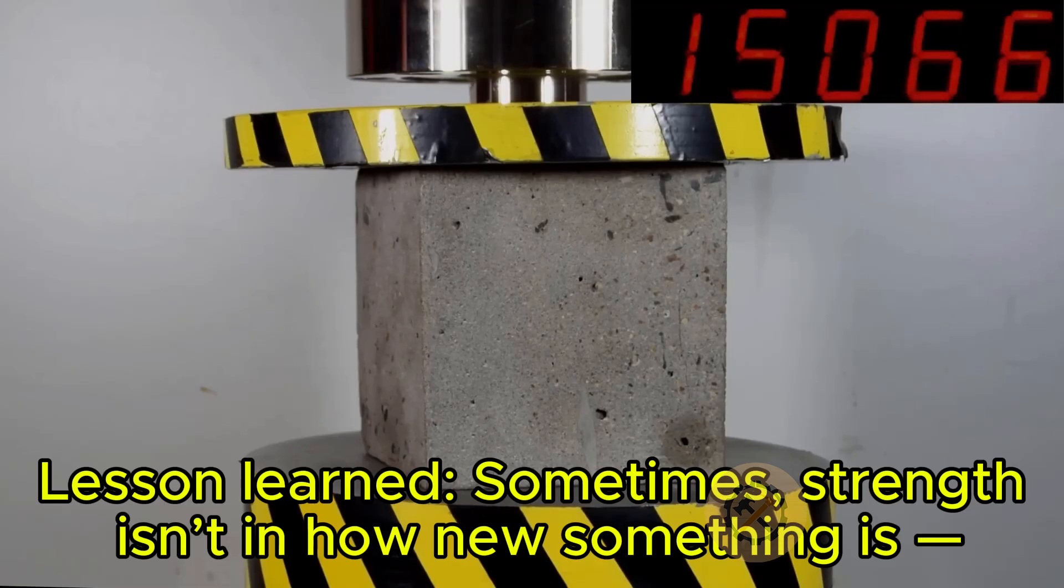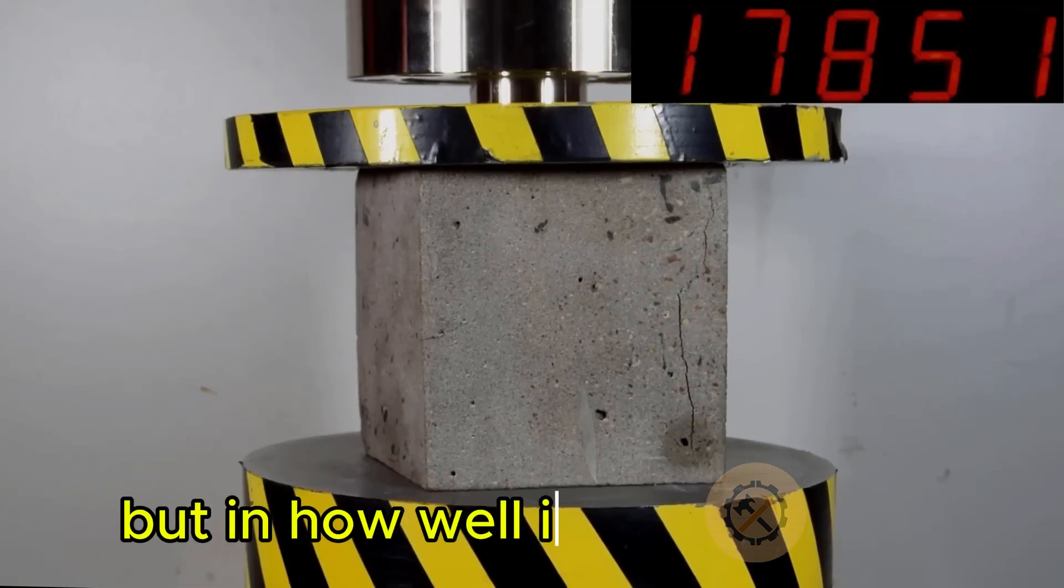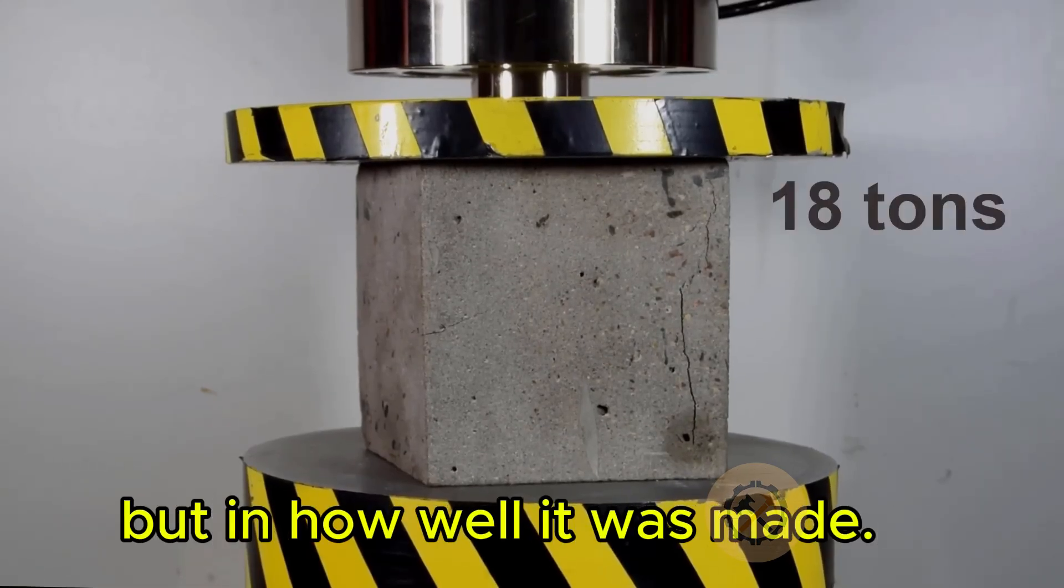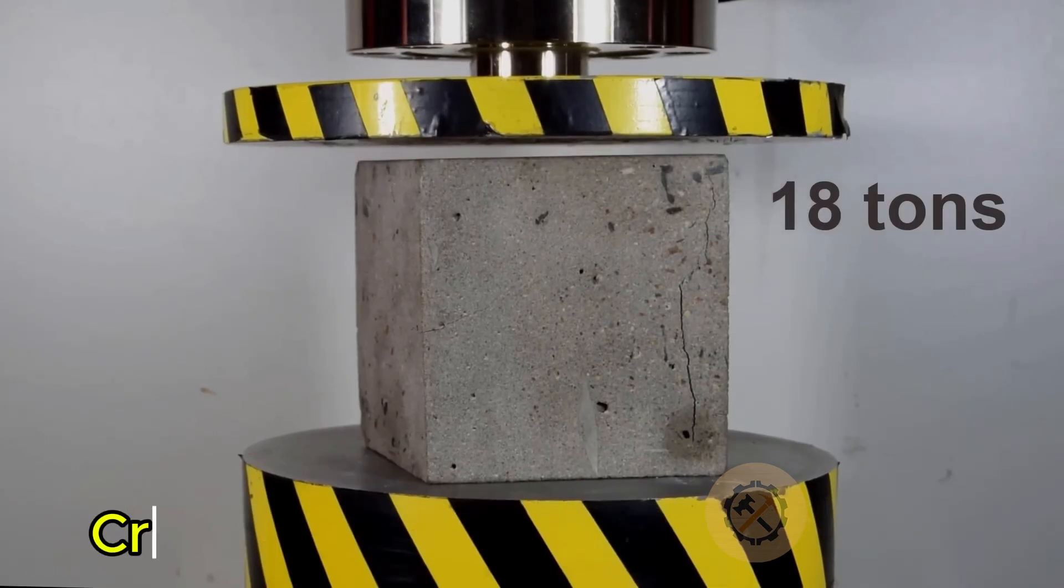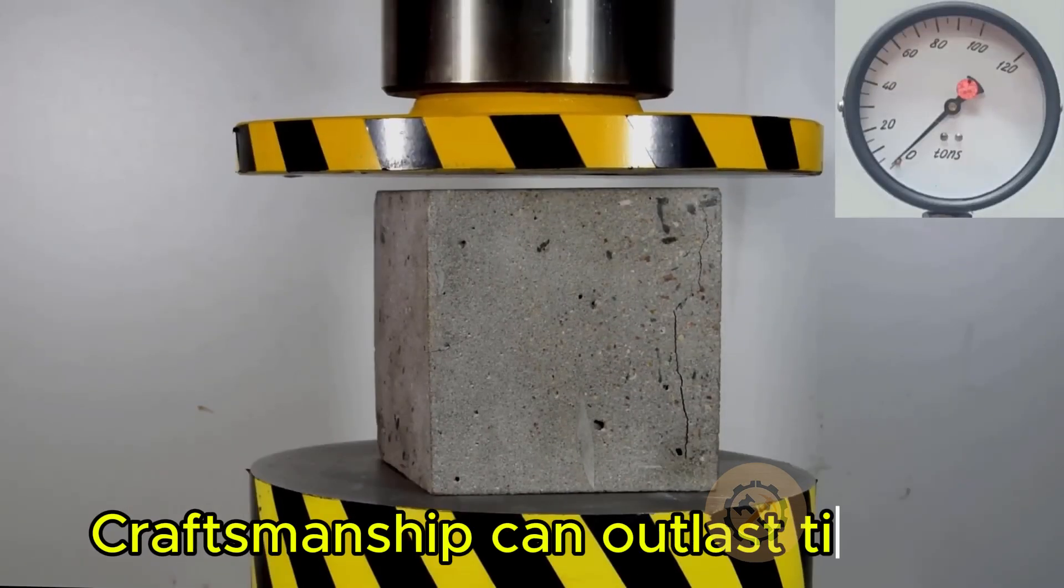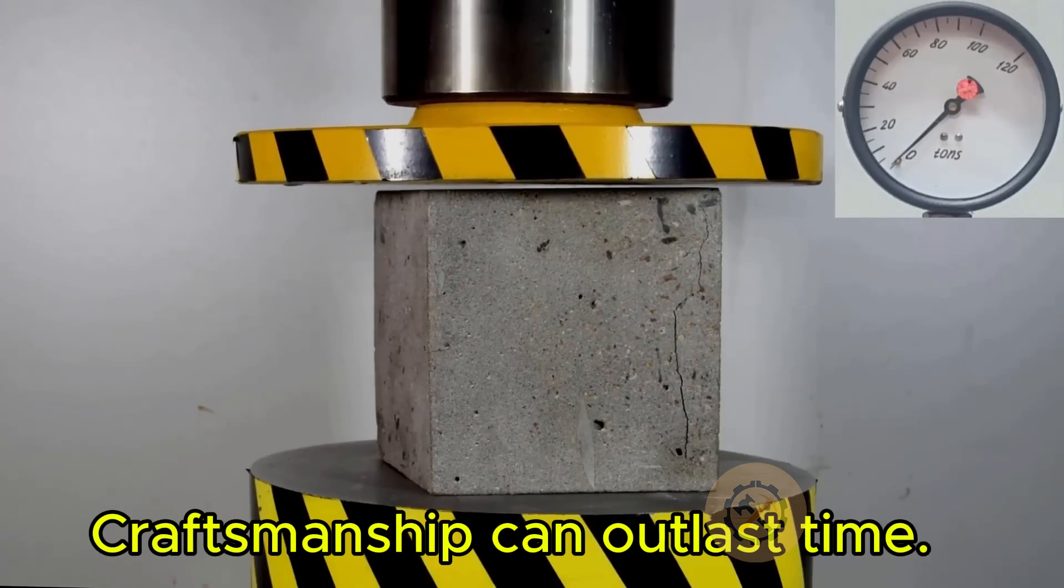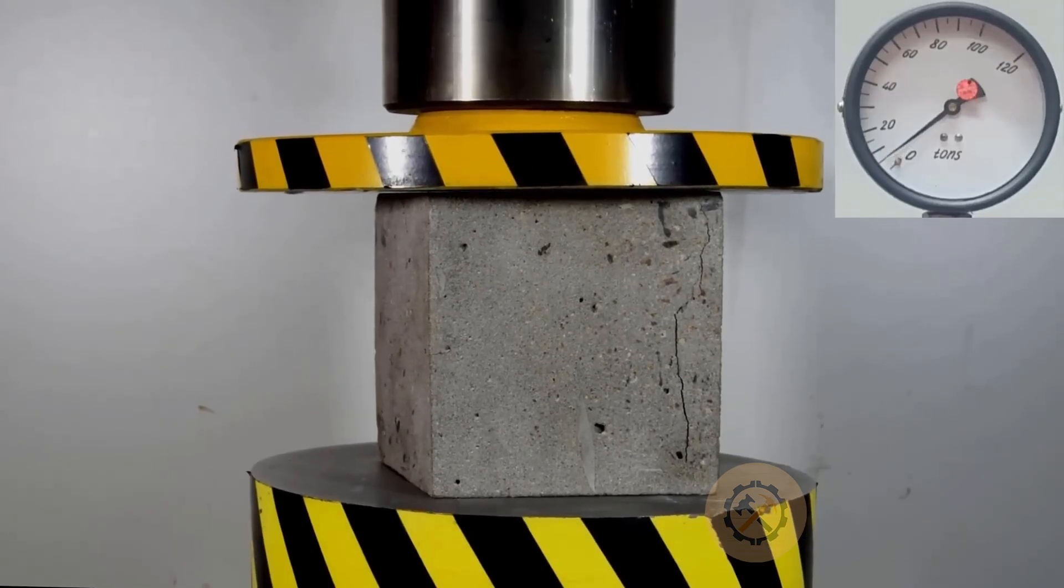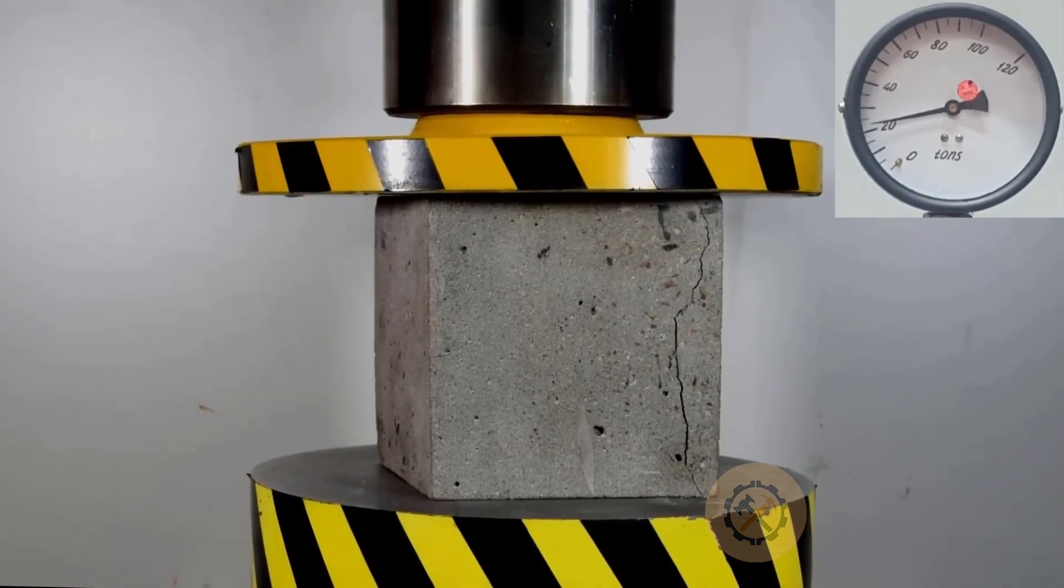In the end, here's the breakdown. Modern brick broke at around 50 to 52 tons. Brick from the 1960s failed at 39 to 42 tons. 150 year old brick withstood up to 55 tons.